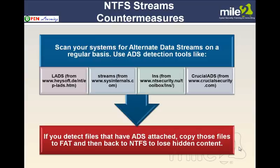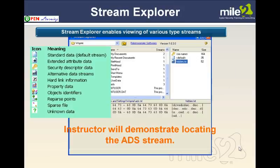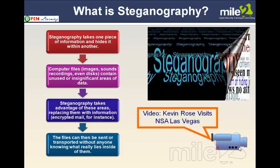As a countermeasure, we can scan our system for Alternate Data Streams on a regular basis using tools such as LADs and Streams. If you find files with Alternate Data Streams, copying them to a FAT32 file system would drop the hidden content, because NTFS Alternate Data Streams only work on an NTFS-formatted drive. In modern Windows systems, FAT partitions are hard to find, but it could be done. You could also use tools like Stream Explorer to reveal hidden content.